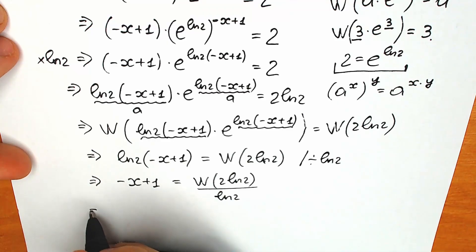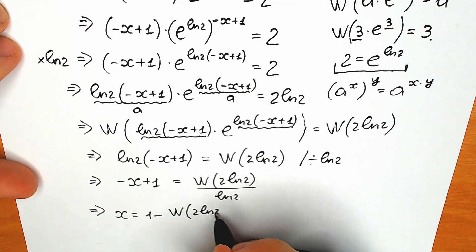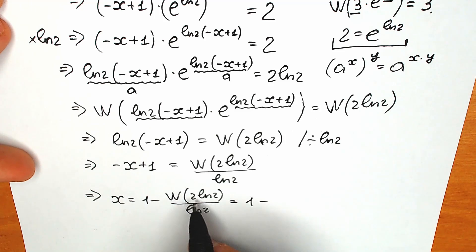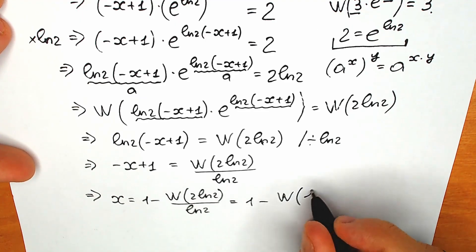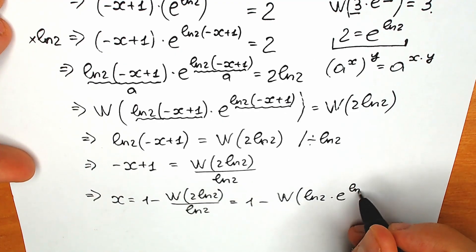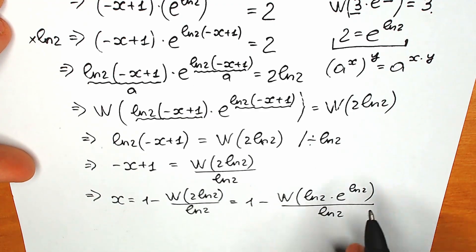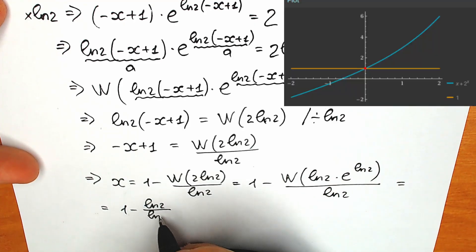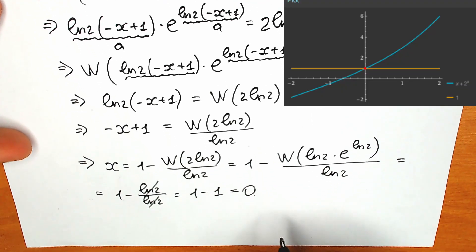Now let's find x from here. We have x equals 1 minus Lambert W(2 · ln2) over ln2. Let's simplify: instead of 2, write e to the power ln2. Rearranging, Lambert W of [ln2 · e to the power ln2] divided by ln2. This is again the structure a times e to the power a with a = ln2, so applying Lambert W gives ln2 in the numerator. So we have 1 minus ln2 over ln2, which equals 1 minus 1, equal to 0. The correct answer is x = 0.